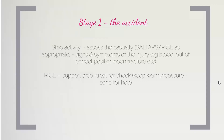Here are the stages. Stage 1 is the accident. We immediately stop the activity, assess the casualty, see the mechanism of injury, and the mode of onset of the injury. We apply SALTAPS and PRICE as appropriate. We assess the signs and symptoms of the injury — for example, bleeding, correct position, or if it is an open fracture. We apply RICE in an acute injury, treat for shock, keep the area warm, reassure, and send for help.